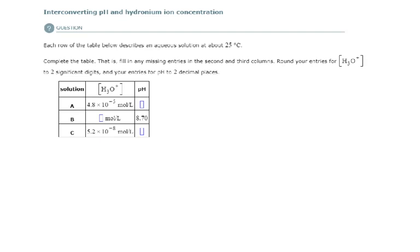For the conceptual background information for this second example, I would encourage you to look at the first example. I added a little bit extra there, but this one will jump straight into it. We have three solutions, and they want us to find either the pH of the solution or the hydronium ion concentration.